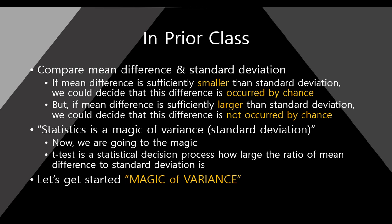In prior class, we were talking about the T-Test, and I said we need to compare mean difference and standard deviation. If mean difference is sufficiently smaller than standard deviation, we could decide that this difference occurred by chance. But if mean difference is sufficiently larger than standard deviation, we could decide that this difference is not occurred by chance. So I said we need to go back to the basic of statistics — that is, statistics is a magic of variance. So today, we will start this magic a little bit.